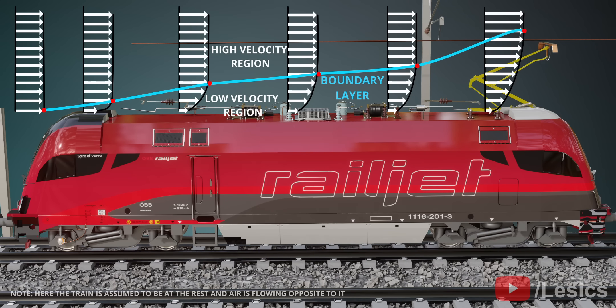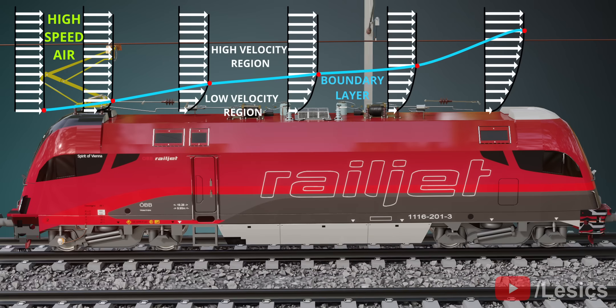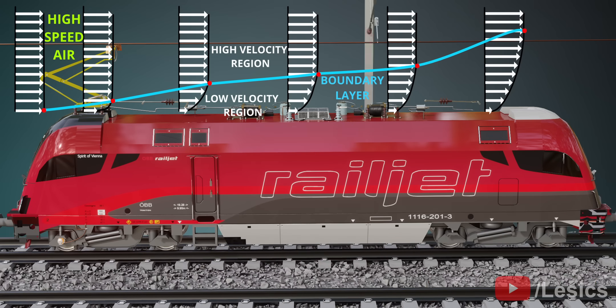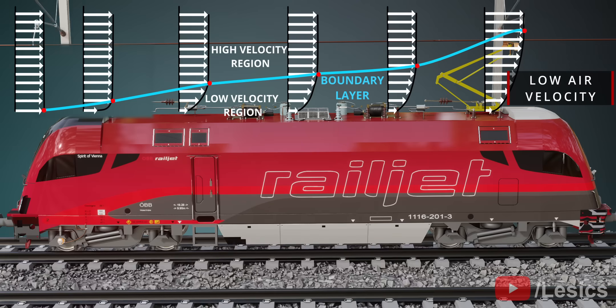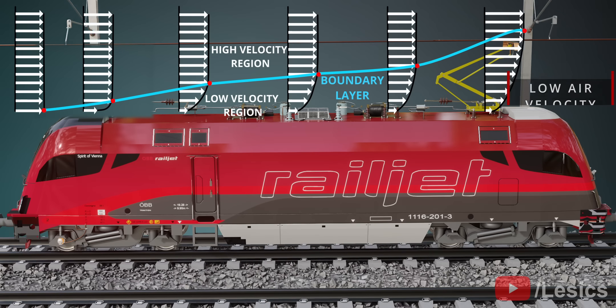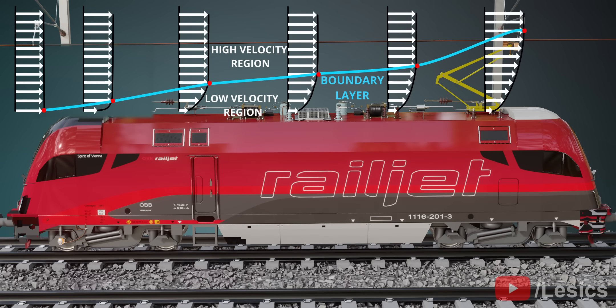Please have a look at the velocity distribution around the train body. If the pantograph is connected to the front of the engine, it has to move against high-speed air. However, you can see the pantograph at the rear of the engine faces much lower air velocity since it is immersed inside the boundary layer. This definitely reduces drag.